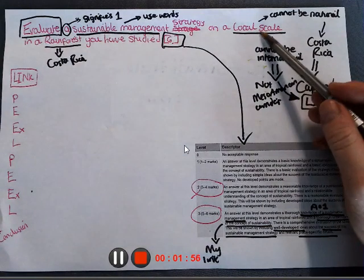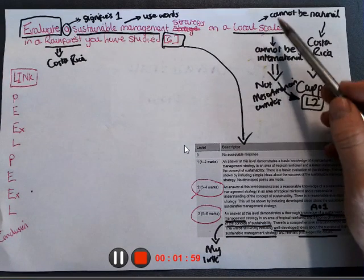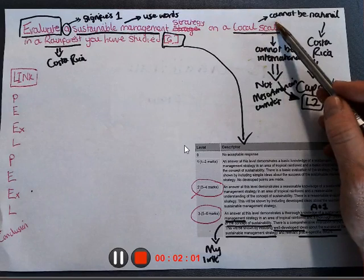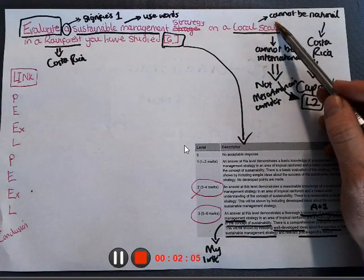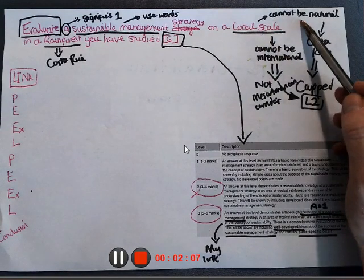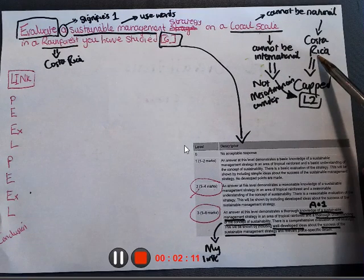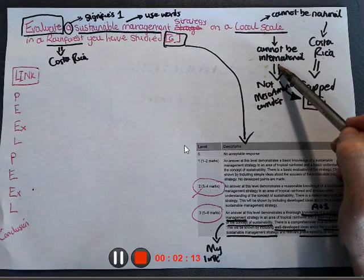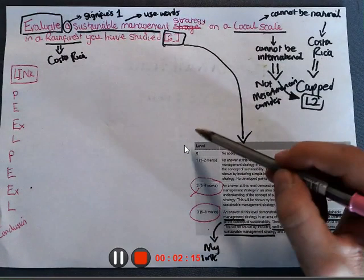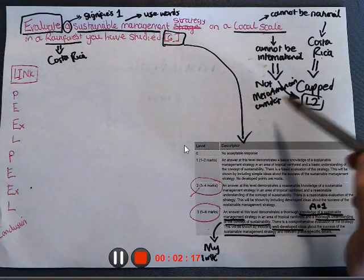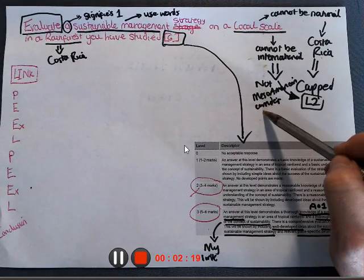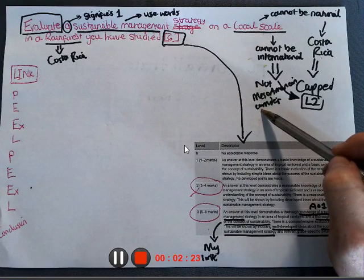Now I wrote local scale on purpose because I've underlined it here. It cannot be national. You cannot say national parks. You cannot say nature reserves because that indicates the whole of Costa Rica. It cannot be international. You cannot hear in this question speak about Costa Rica's Mesoamerican corridor because it is not saying a sustainable management